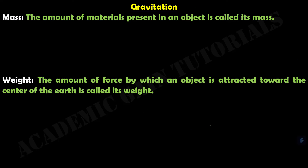Now we have to know what is mass and what is weight. Mass is the amount of materials present in an object — the amount of materials present in an object is called its mass. It is denoted by M, either capital M or small m, and it is a scalar quantity.